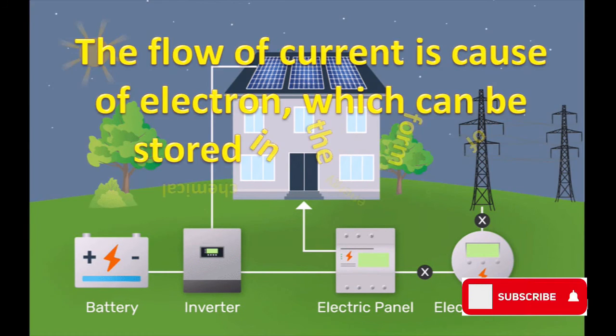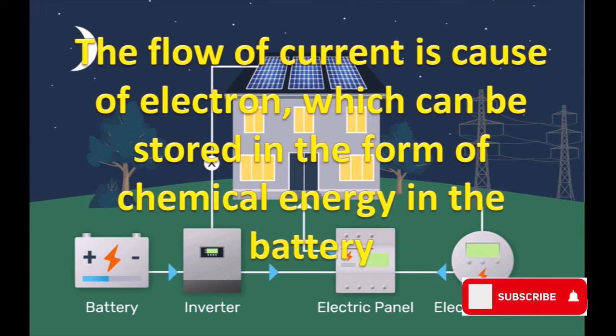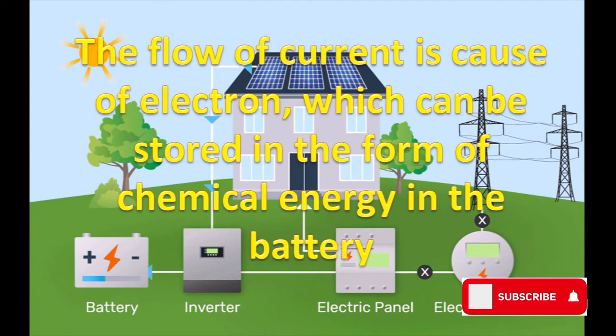The flow of current is caused by electrons, which can be stored as chemical energy in a battery.